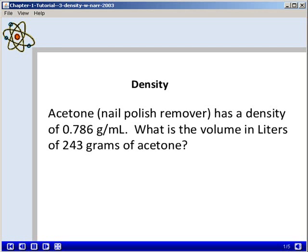In this problem, we're told that acetone, the main ingredient in nail polish remover, has a density of 0.786 grams per milliliter. We want to calculate the volume in liters of 243 grams of acetone.